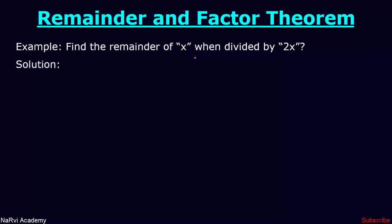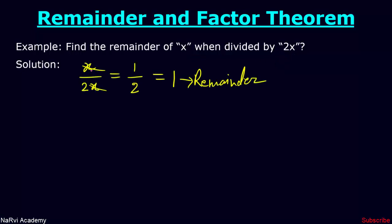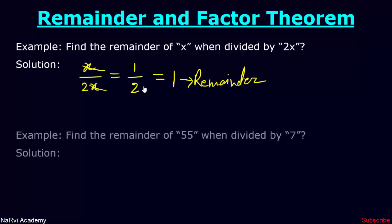Find the remainder of x when divided by 2x. If we divide x by 2x, we will get 1/2. Here, 1 is the remainder of this expression because we cannot divide 1 by 2 completely.